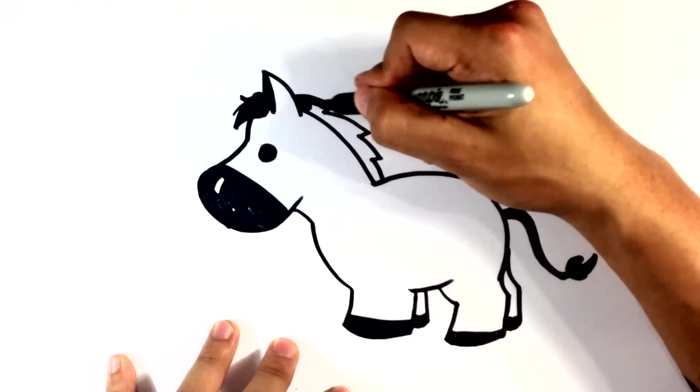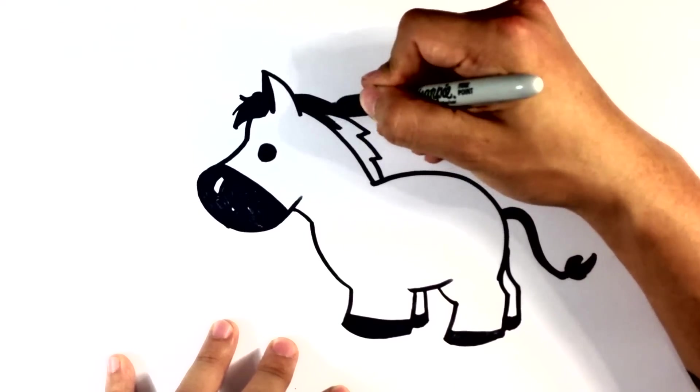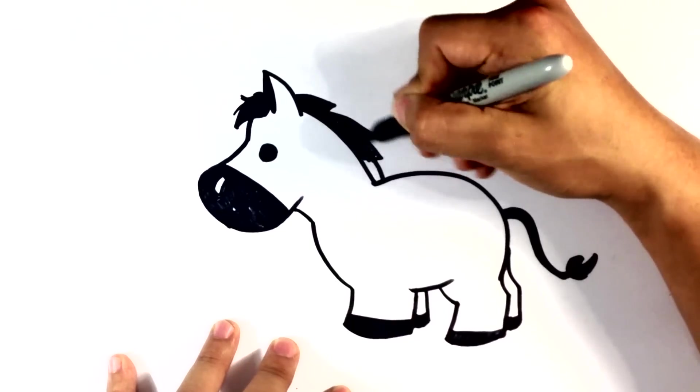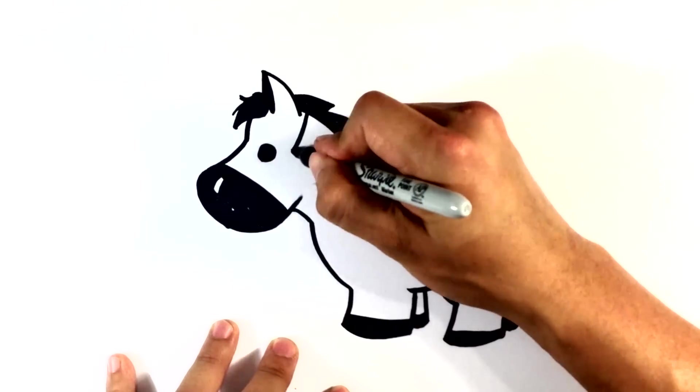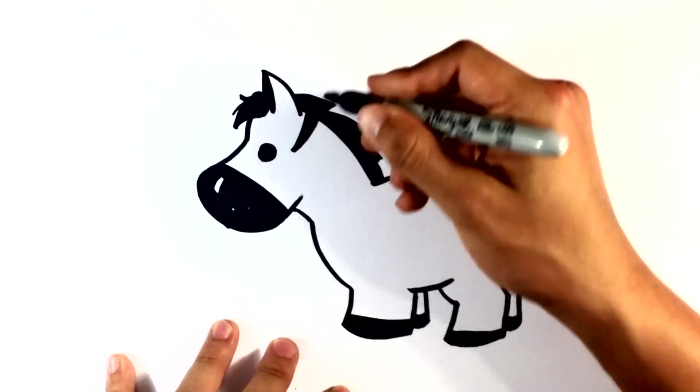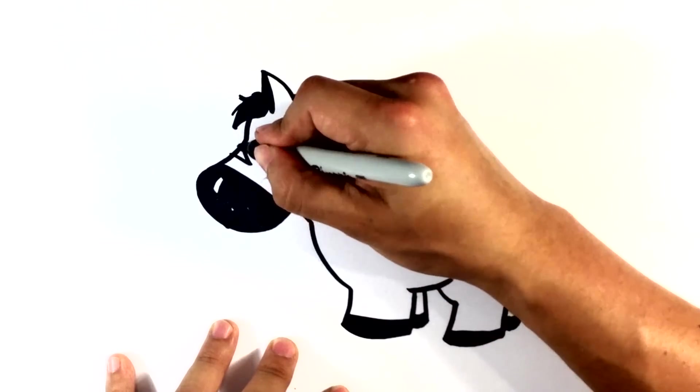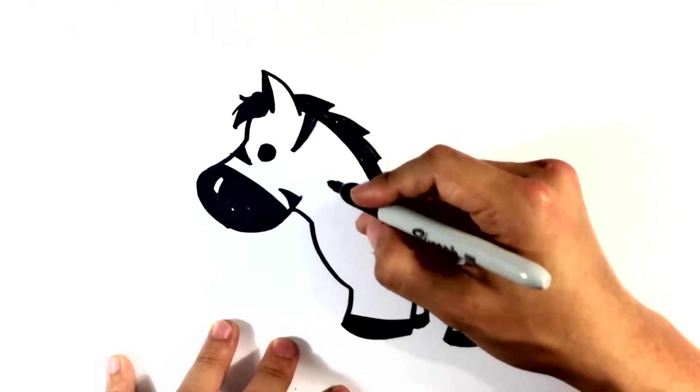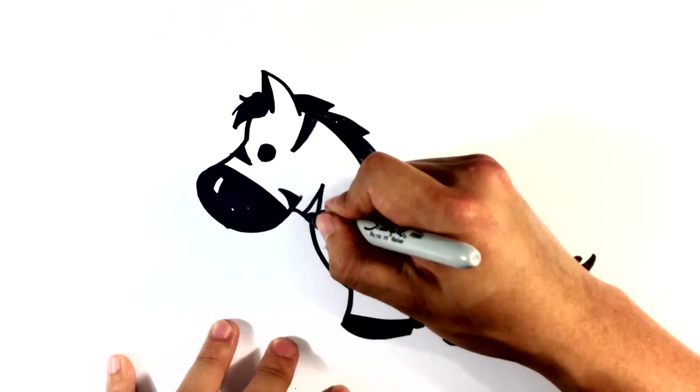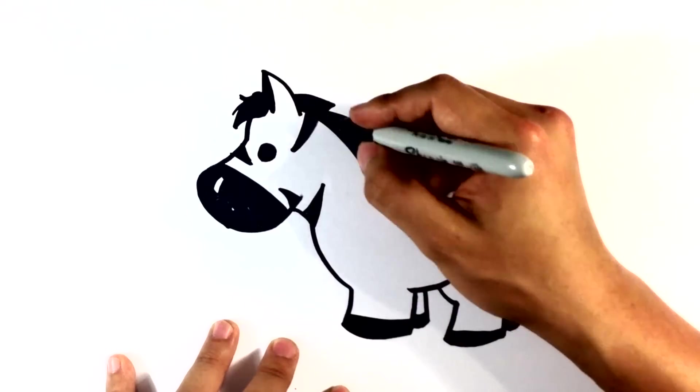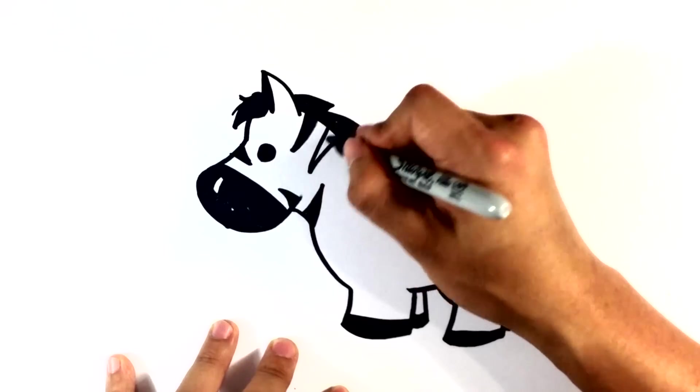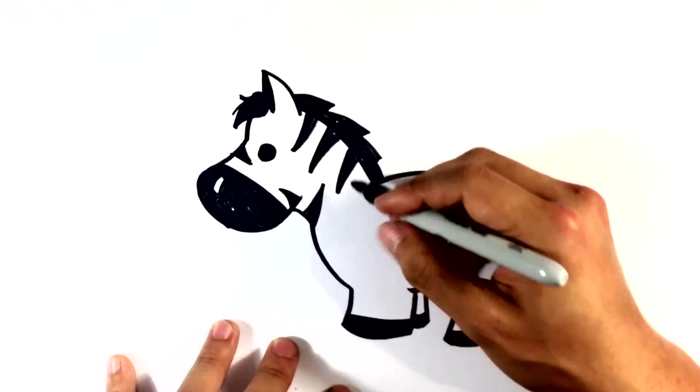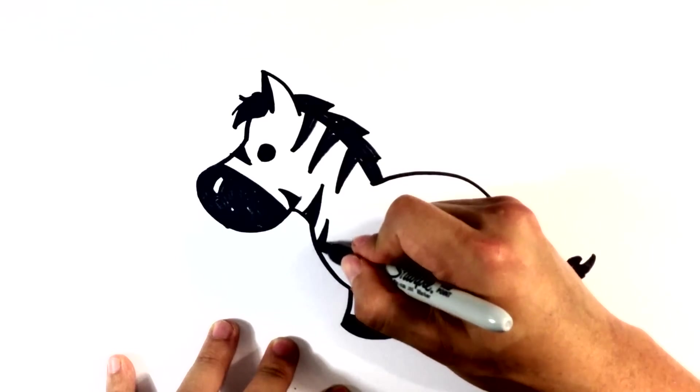The mane near the back of the hair. Stripe, stripe, stripe to the front. Stripe over here, stripe over here, stripe over here.